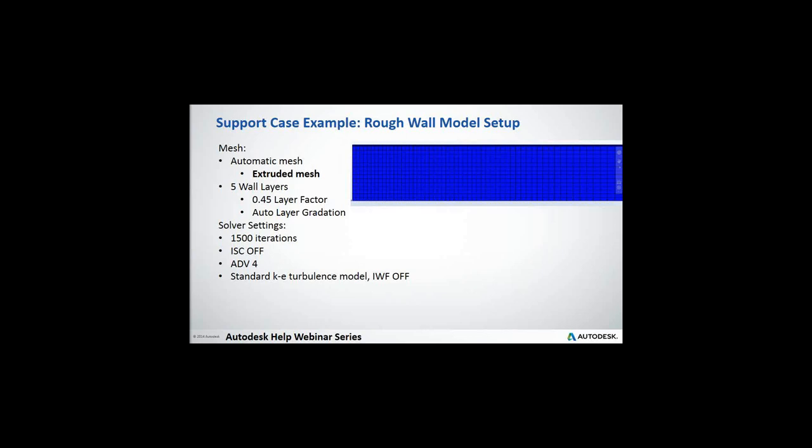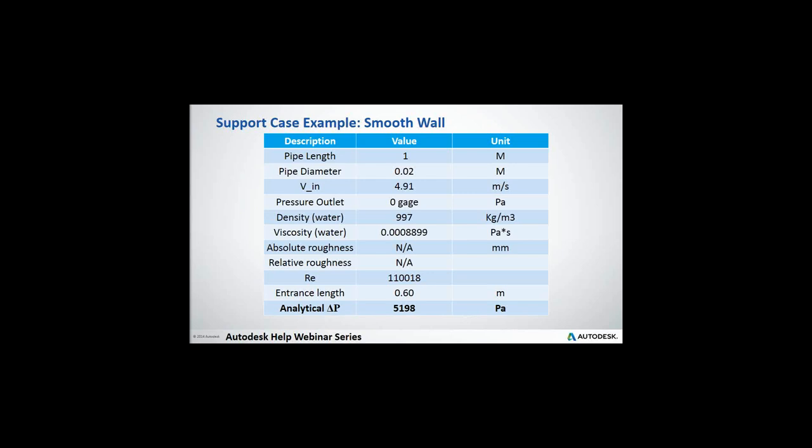Now the way I have these things ordered, here's my smooth wall. And I'm going to show results at the same time. Now, absolute roughness and relative are not applicable here. Basically, in order to get a friction factor, I'll use the Blasius correction. And I'll show you. So again, all the boundary conditions and pipe size are the exact same. The analytical is 5,198 Pascal pressure drop, exact same pressure drop length and all.